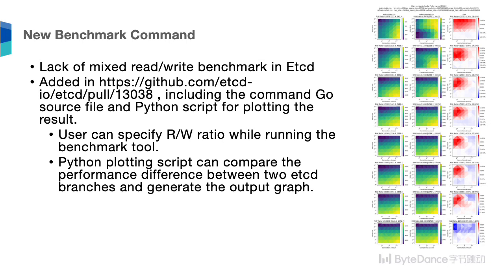We also added a Python script which can be used to compare two different benchmark results and generate a graph, so you can see the difference between different branches. The plot on the right shows the performance difference between two different etcd branches. The first column is the performance of the first branch, the second column is the performance of the second branch, and the third column is the difference between the two. The different rows represent different read and write ratios.